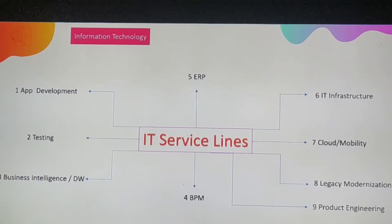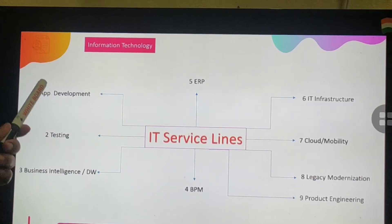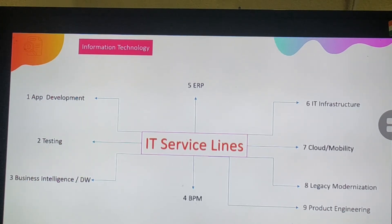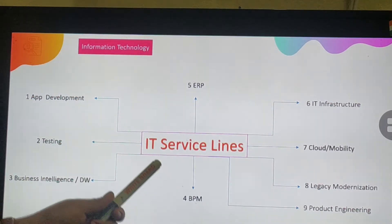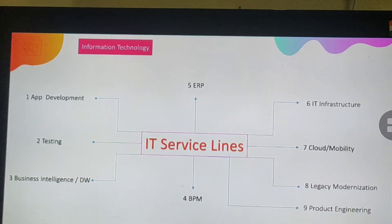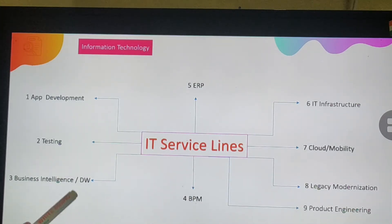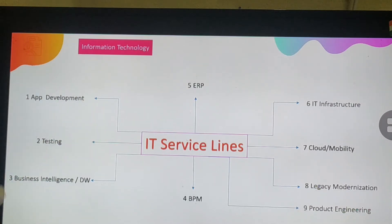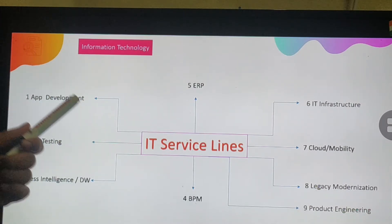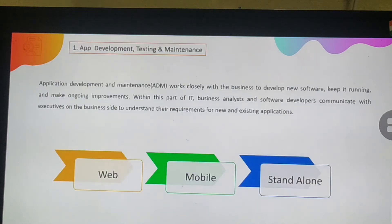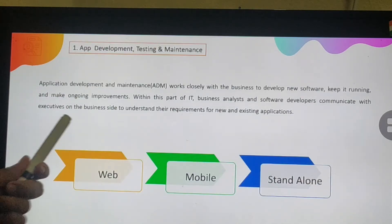Information technology consists of software, hardware, applications, security, database, communications, servers, internet, network, and support. There are various IT services that organizations provide to different companies and clients in the United States, which include application development, testing services, business intelligence and data warehousing, enterprise resource planning, business process management, IT infrastructure, cloud and mobility, legacy modernization, and product engineering.